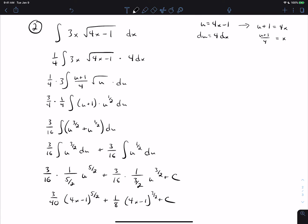Plus 1 over 8, 4x minus 1 to the 3 halves plus c. Okay, and so just real quick, the way I'm doing the fractions is 3 over 16 times 2 over 3. The 3's cancel, and the 2 and the 16 cancel, so that's where I'm getting the 1 eighth. Something similar on the other problem. 3 over 16 times 2 over 5. The 2 and the 16 cancel, and I get an 8, which is where I'm getting the 3 over 40.